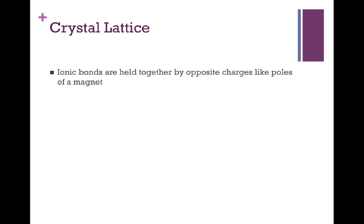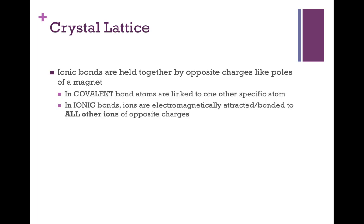So as we get closer to the end of our discussion today, we're going to talk about the structure that ionic bonds tend to form. And it's very different than the structure we see from covalent bonding. As you recall, ionic bonds are held together by the opposite charges, similar to the poles of a magnet. In covalent bonding, atoms are linked together to one other specific atom.